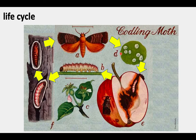Let's look at the life cycle of the codling moth. It begins with the adult moth, which lays its eggs on a leaf. As soon as the eggs hatch into a tiny little larva, the larva immediately tries to enter the apple fruit. As it tunnels through the fruit, it grows bigger and bigger. Eventually, when it's full grown, it exits the fruit and looks for a place to pupate.